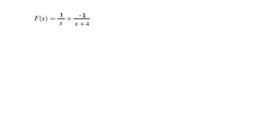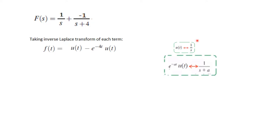So f(s) can now be written as 1 over s plus minus 1 divided by s plus 4. We now take the inverse Laplace transform to go into the time domain, taking help of these two table entries. For 1 over s we write u(t), and for 1 over s plus 4 we write e to the power minus 4t times u(t). Taking u(t) common, this becomes the final answer. I hope this gives you some idea as to how to solve this type of problem. Thank you.